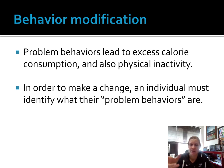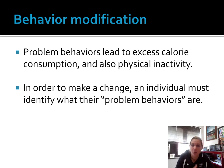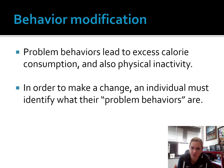Problem behaviors lead to excess calorie consumption and also physical inactivity. It's important to get to know this person and figure out what those problem behaviors are — a lot of that is self-reflection. For example, my husband's barrier to physical activity is the time of day. If he doesn't get up in the morning and do it then, he's not going to do it. Or if it's an afternoon or evening thing, he has to be meeting a friend to go for that run or bike ride, otherwise he's just not going to do it. Understanding those particular barriers is key.